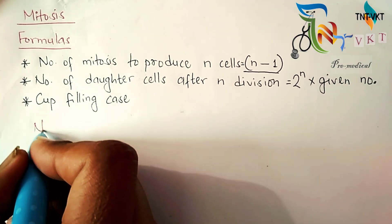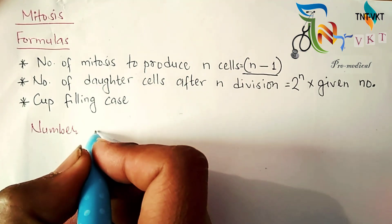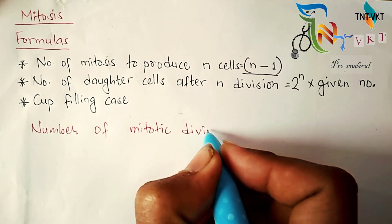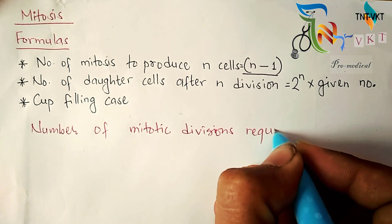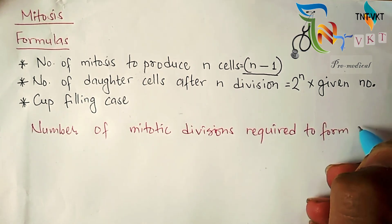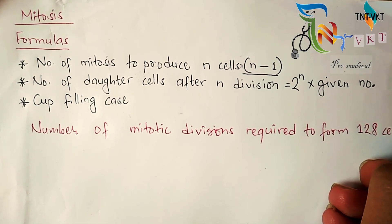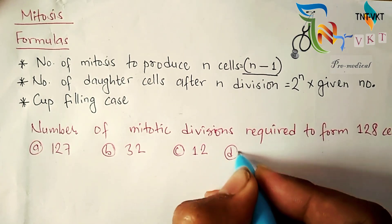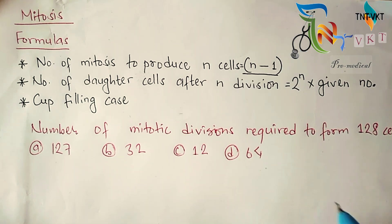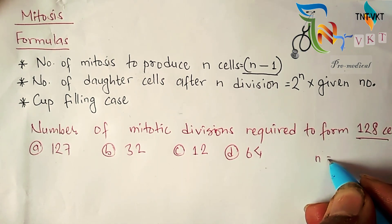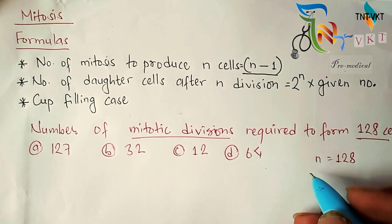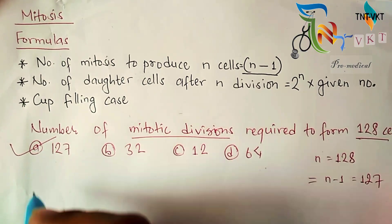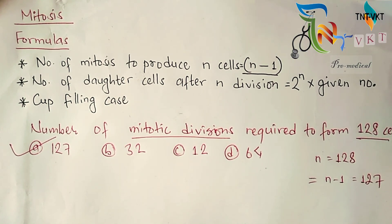Question: Find the number of mitotic divisions required to form 128 cells. Options: 127, 32, 12, or 64. The required number n equals 128. Number of mitotic divisions is n minus 1, which means 128 minus 1 equals 127. So the correct answer is 127.